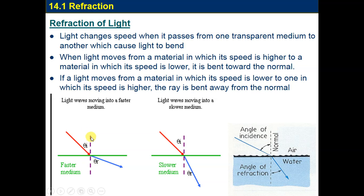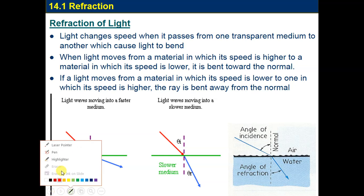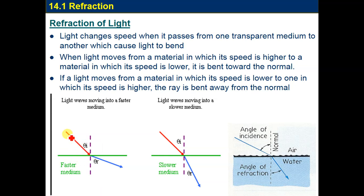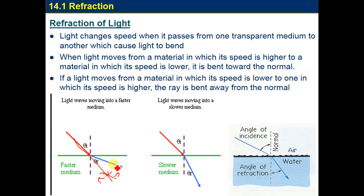At this boundary we draw the normal and show the angle of incidence. This is the original path of light. Will the light continue straight as it goes from water to air? No, it will not. So how will it bend — toward the normal or away from the normal? We have these two options.